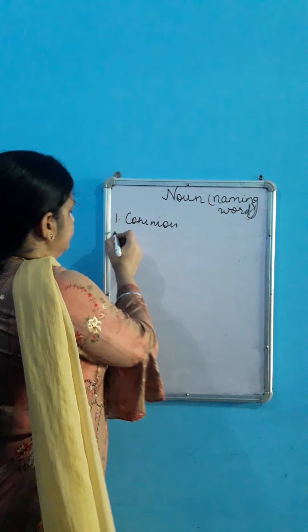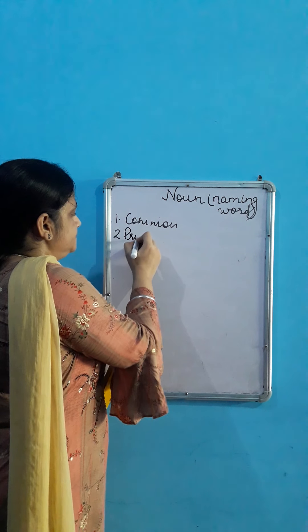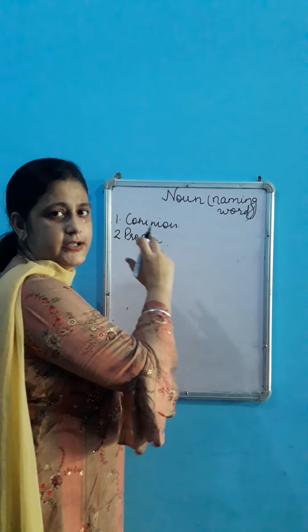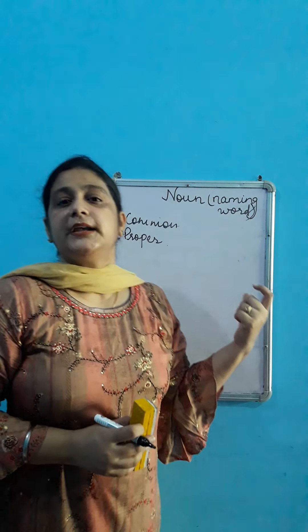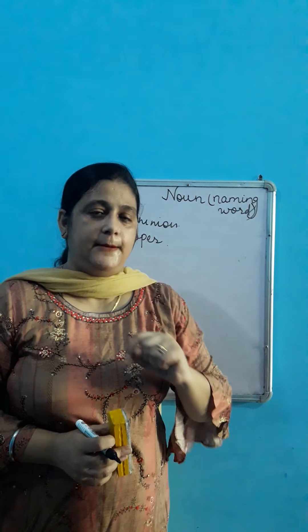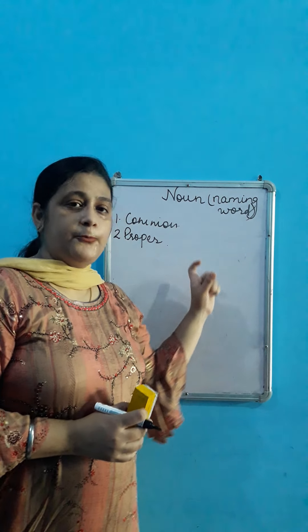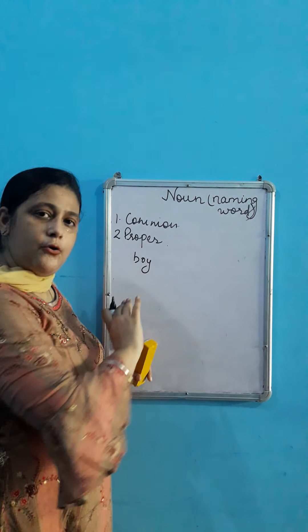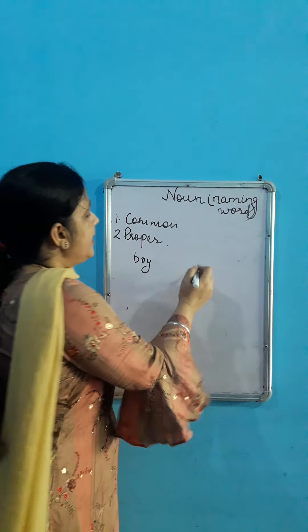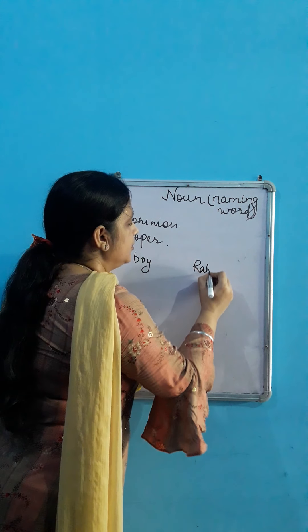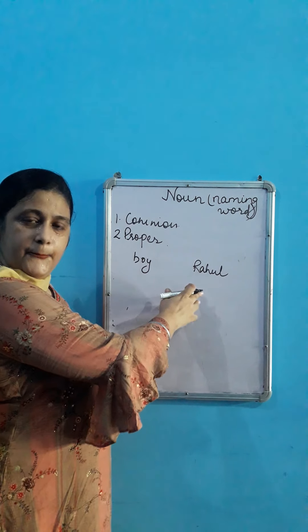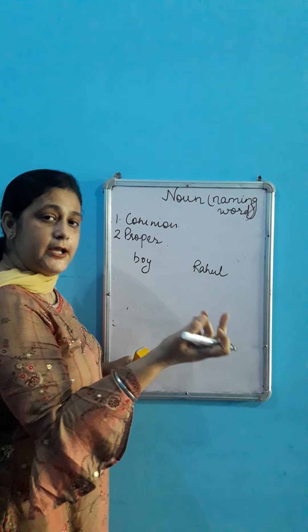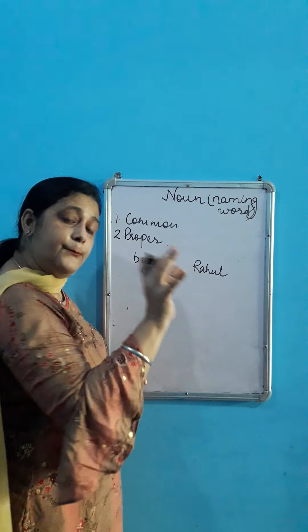Next comes proper noun. Common aur proper — abhi aapko main achhe se aur clear karti hoon. Proper kya hota hai? Kisi cheez ka proper name. Agar aapko common aur proper name ka difference batate hain — dekho, agar aap kaho 'boy,' to woh to kya hoga? Common noun. Agar aap kaho 'Rahul,' to kya hoga? Proper noun. It means aap particular Rahul ko bula rahe ho, kisi ek boy ko nahi. Par Rahul kya raha hai? Proper name.